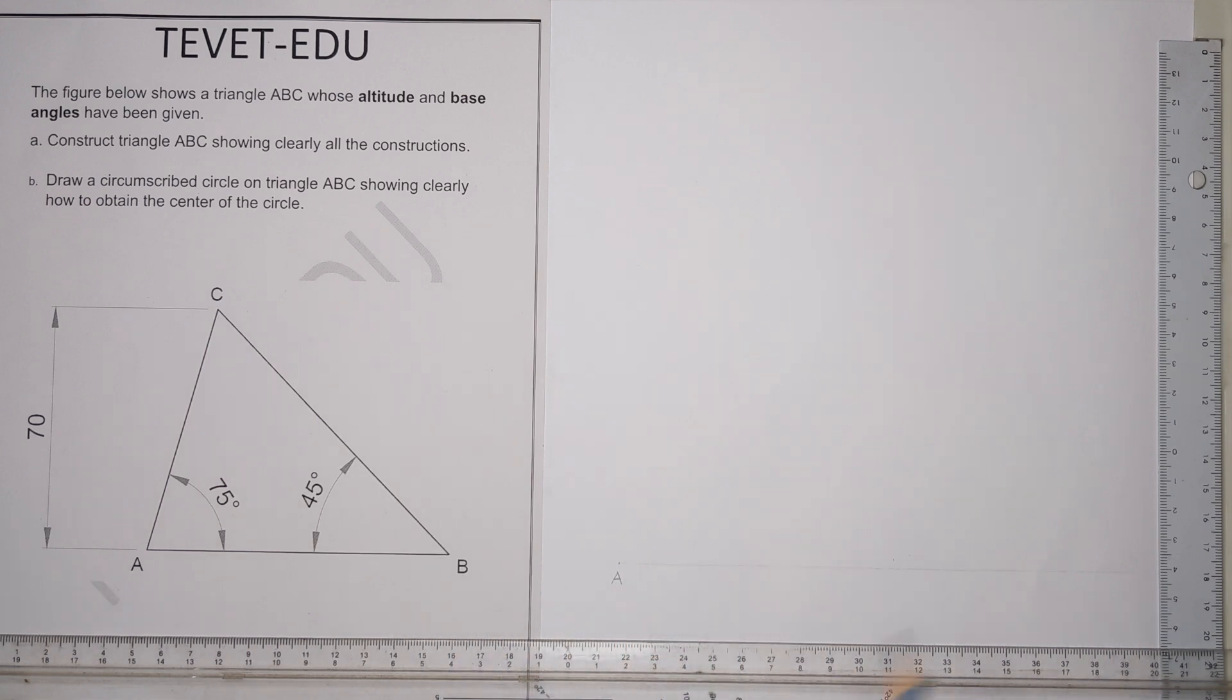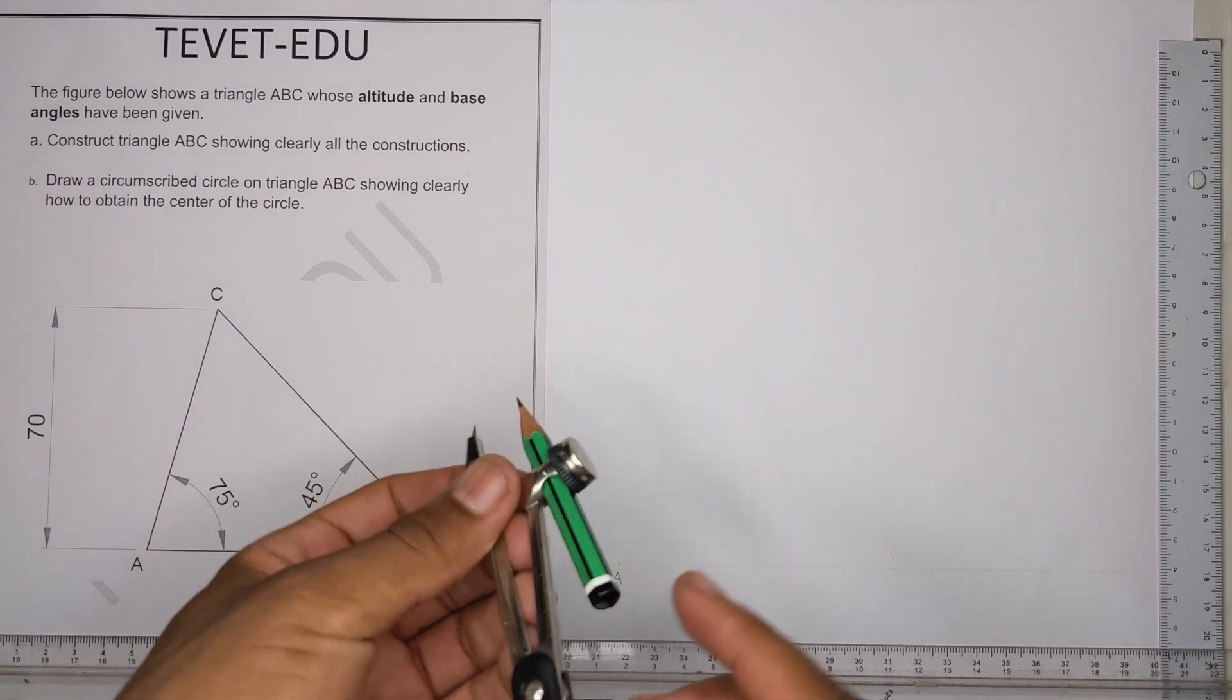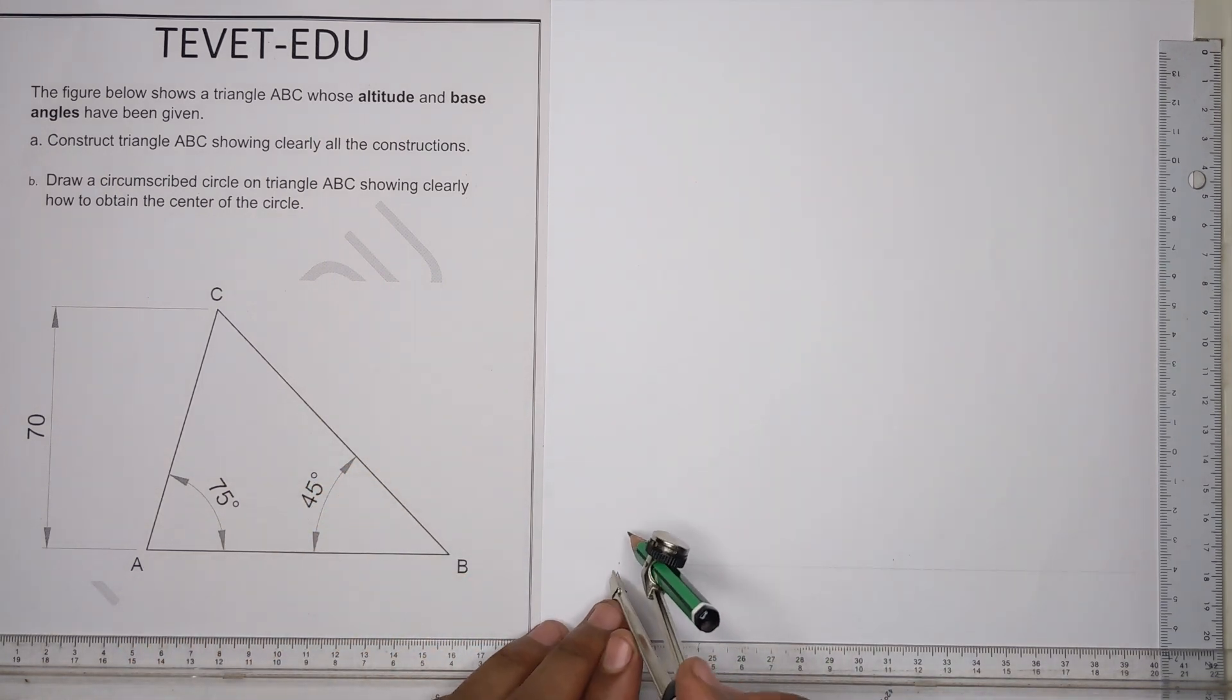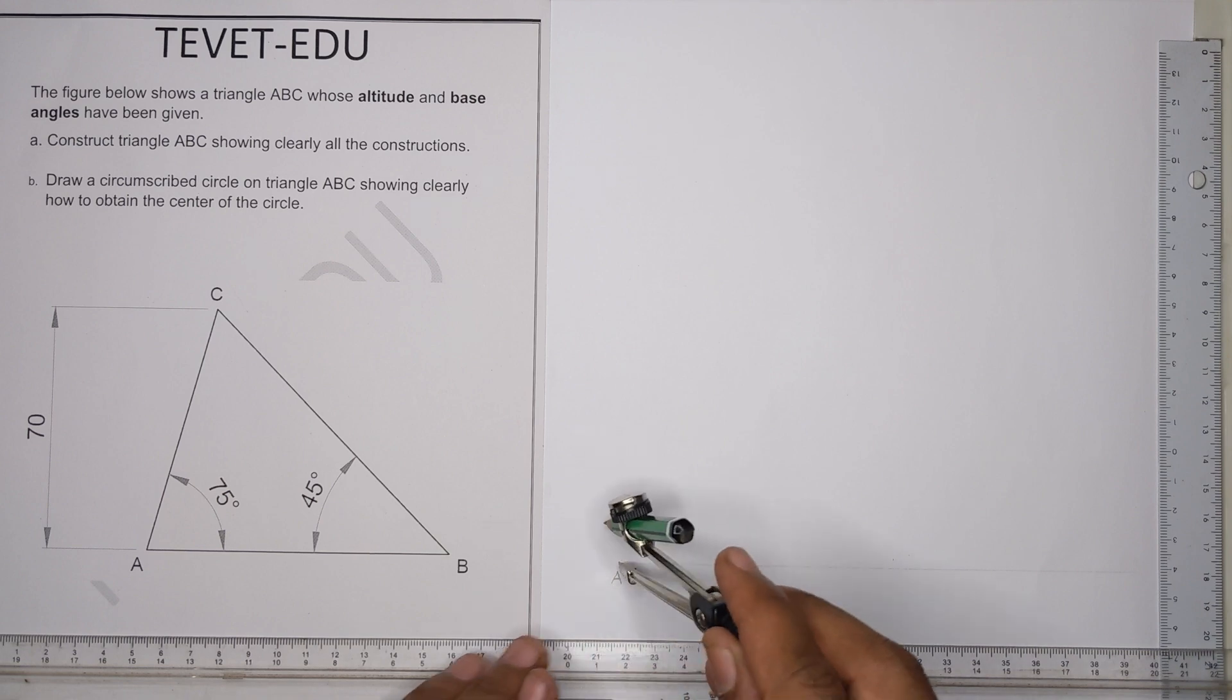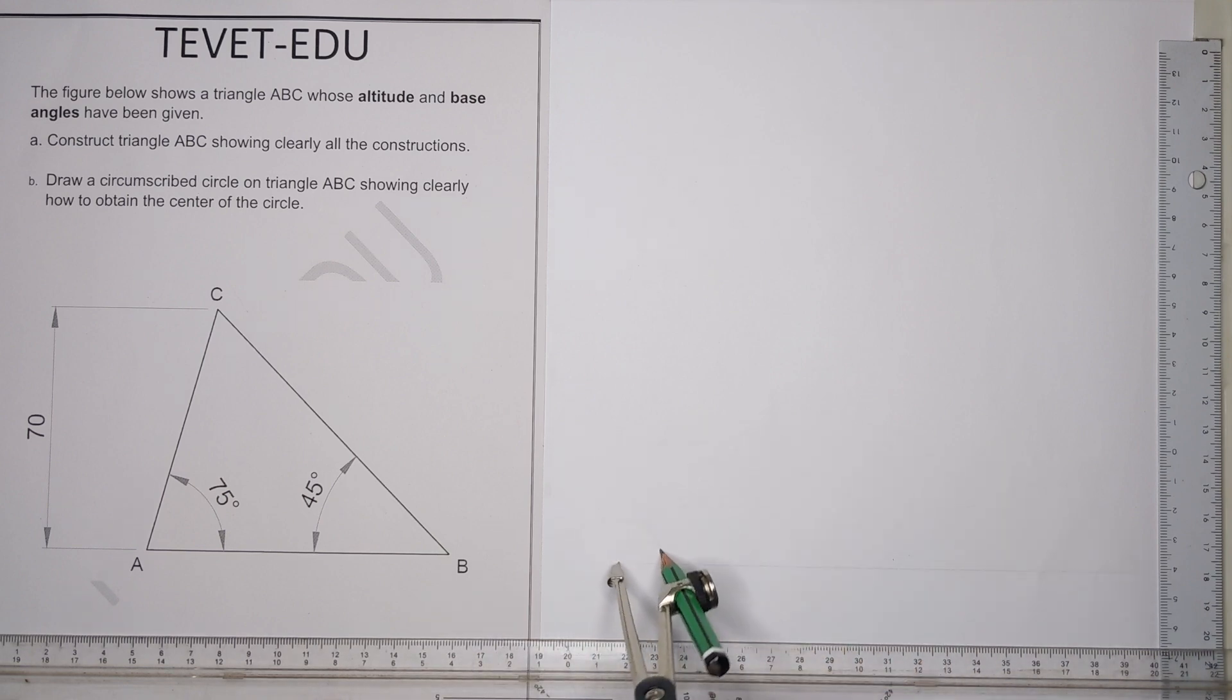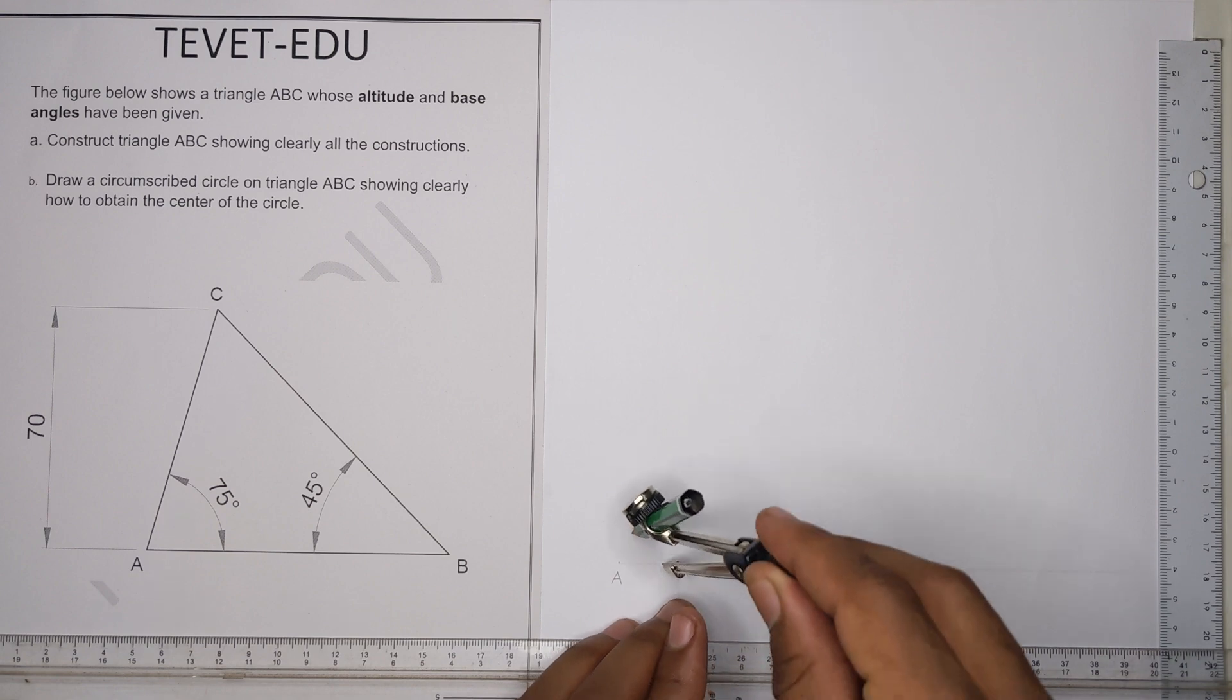From point A we'll construct the angle which is 75 degrees. You get your compass, open it to any convenient radius of your choice, and construct 75 degrees.